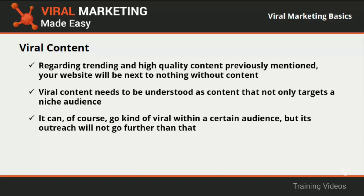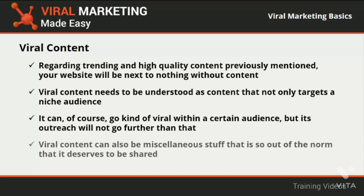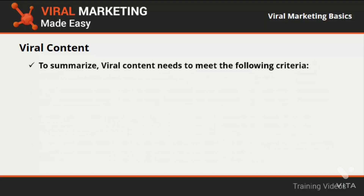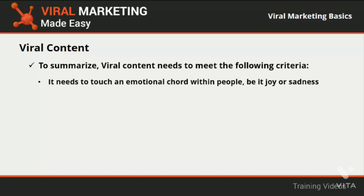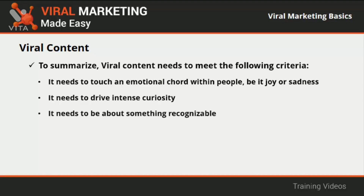Viral content can also be miscellaneous stuff that is so out of the norm that it deserves to be shared — like new tech products, scientific discoveries, and news pieces. To summarize, viral content needs to meet the following criteria: it needs to touch an emotional cord within people, be it joy or sadness; it needs to drive intense curiosity; and it needs to be about something recognizable. The third element is social media — without a shadow of doubt a giant force behind making something go viral, because social media makes it really easy for content to spread at a really fast rate among different groups of people.